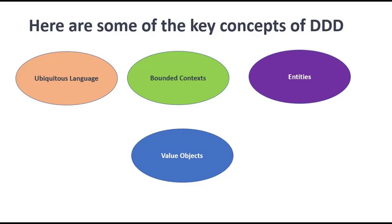Value Objects are objects in the domain that have no identity of their own and are defined by their attributes or properties. They represent concepts in the domain that can be measured or compared, such as currency values, dates, or email addresses.